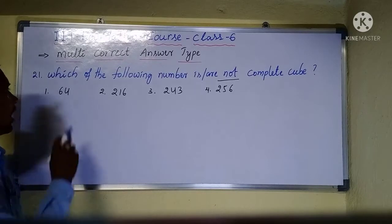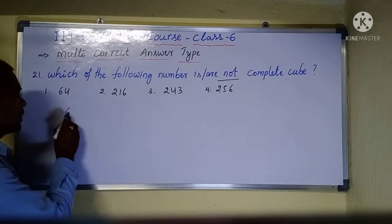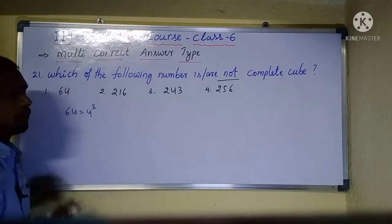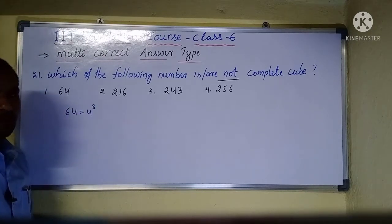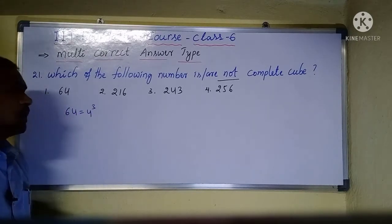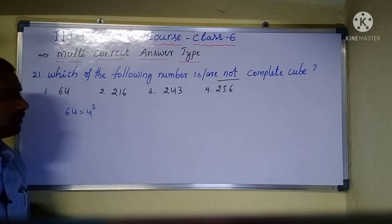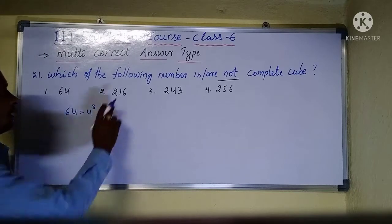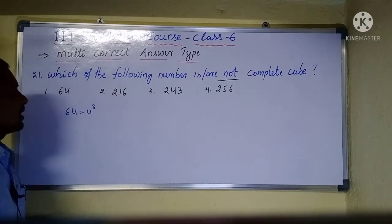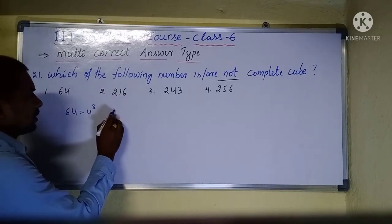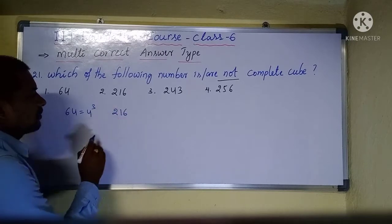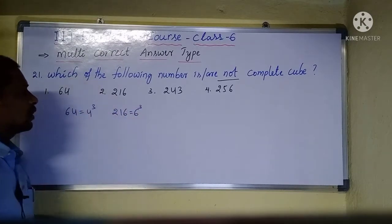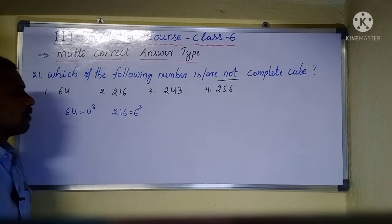If you observe option number 1, 64 is nothing but 4 cube, so this is a perfect cube. This is not going to be our answer. Then coming to 216 — 216 is nothing but 6 cube, so this is also a perfect cube.